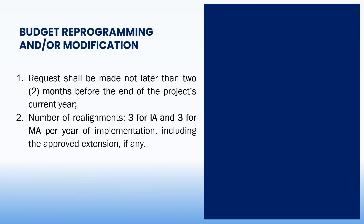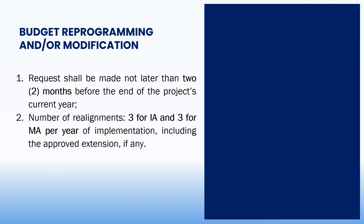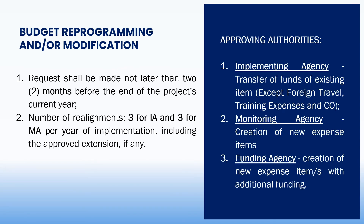Budget reprogramming and/or modification shall be made not later than two months before the end of the project's current year. The allowed number of budget realignments is three for each of the implementing and monitoring agencies, including the approved extension, if any.